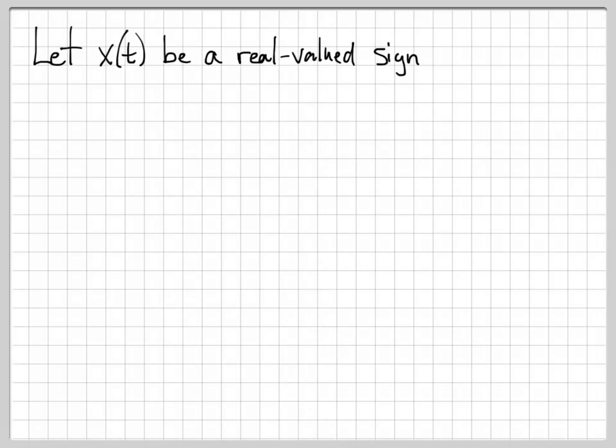So let's let x of t be a real-valued signal, and this signal x of t has a Fourier transform, x of omega.